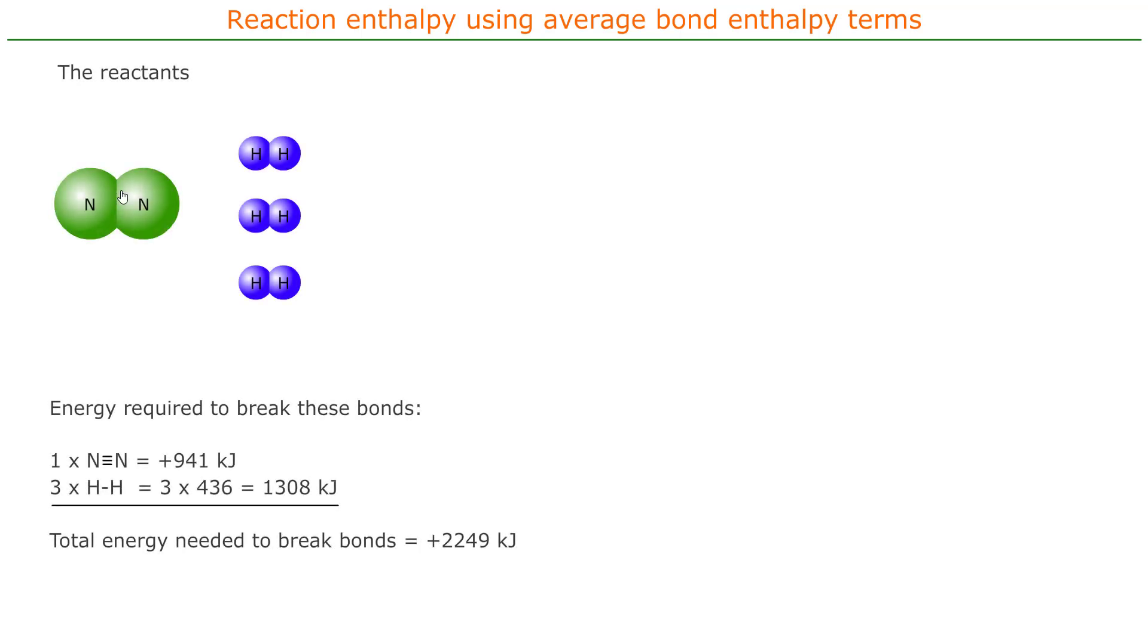So this is our reactants. Here in the reactants, as you see, we've got one nitrogen molecule and three hydrogen molecules. So that's N2 plus 3H2. Now if we want to break these bonds apart, we need to break the two nitrogens, and that requires putting in 941 kilojoules of energy.